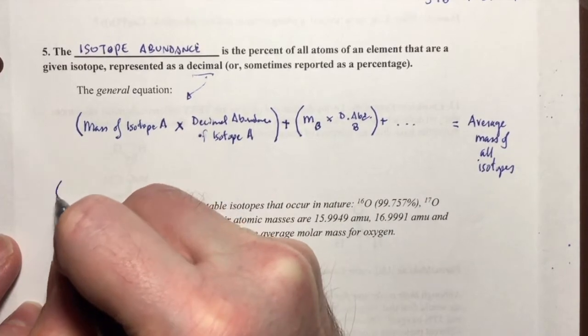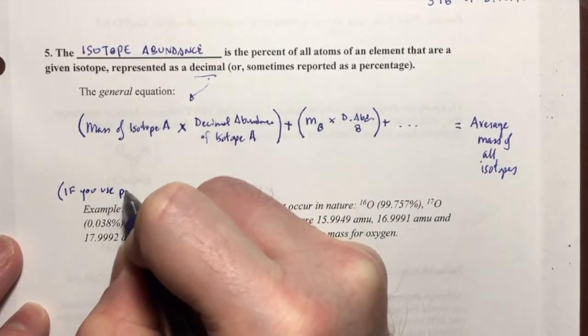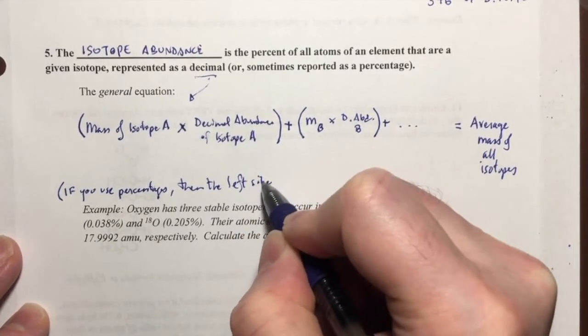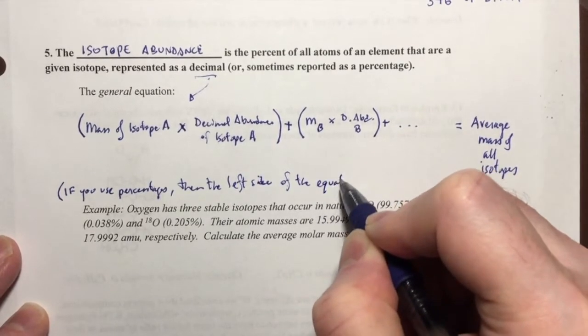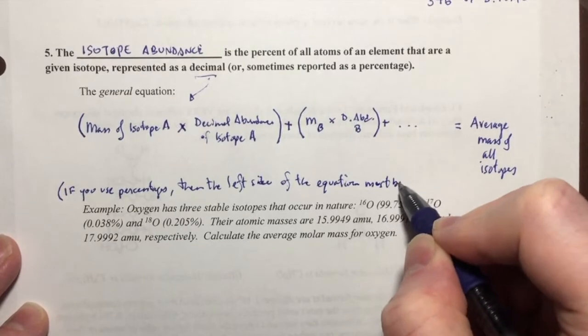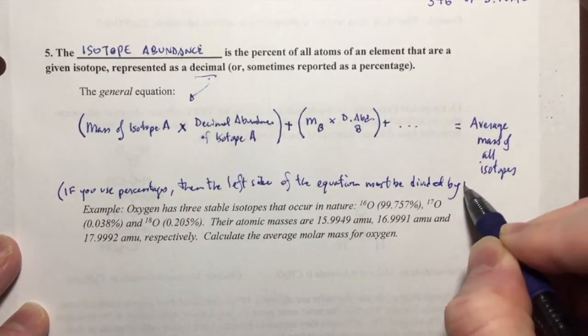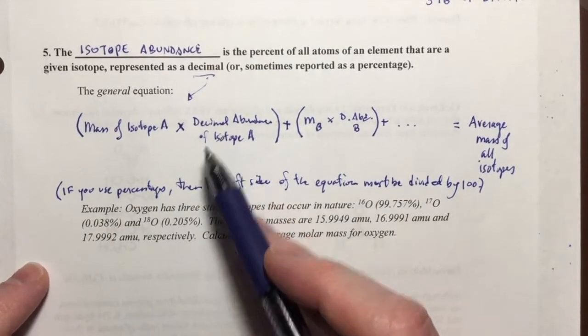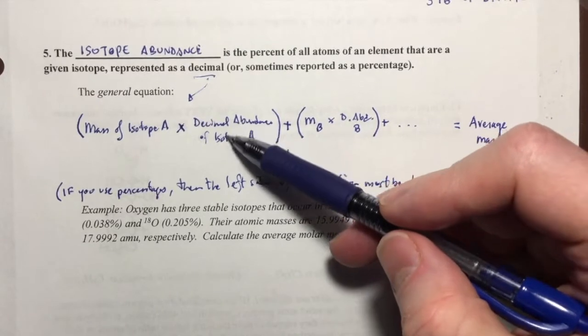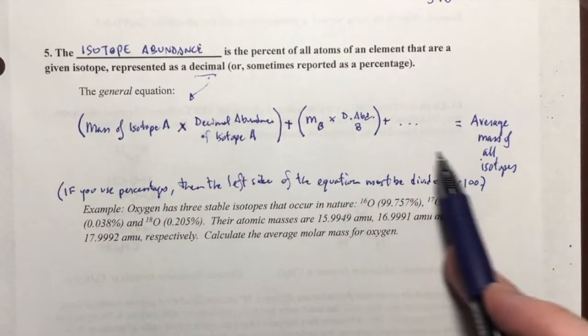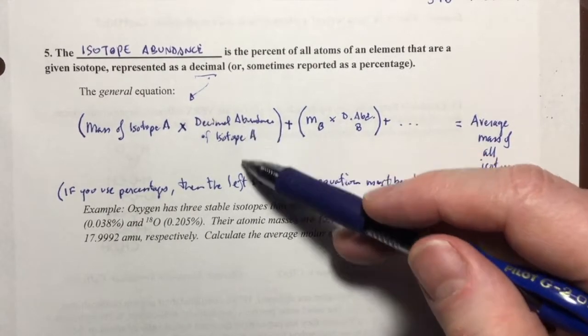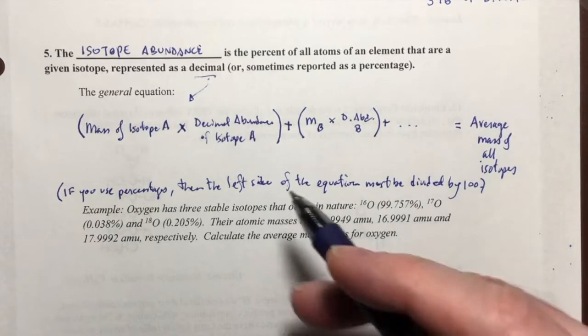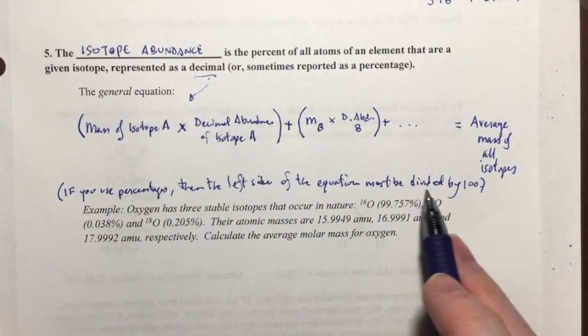If you use percentages, then the left side of the equation must be divided by 100. What does dividing all of this by 100 do? It converts the percentages to decimals. So, if you had a 50 percent in the percentage abundance, then by dividing this whole side by 100, you would end up mathematically converting those percentages to decimals. That's the general form of the equation with decimal abundances. But if you use percentages, then the left side of the equation must be divided by 100.